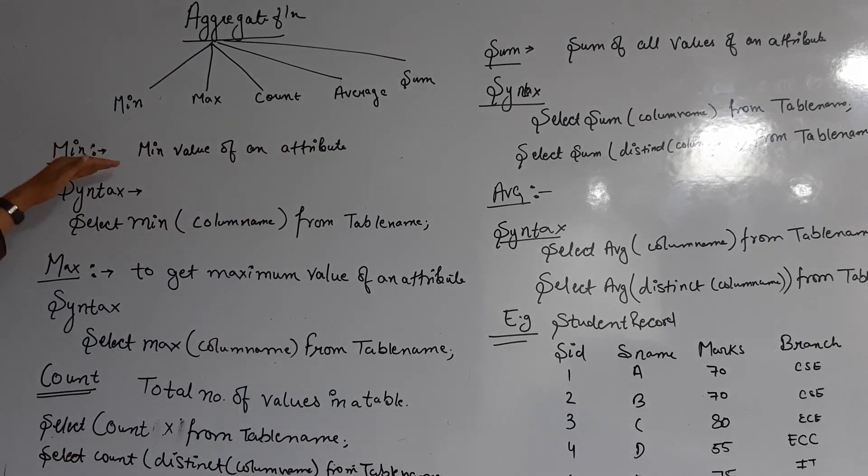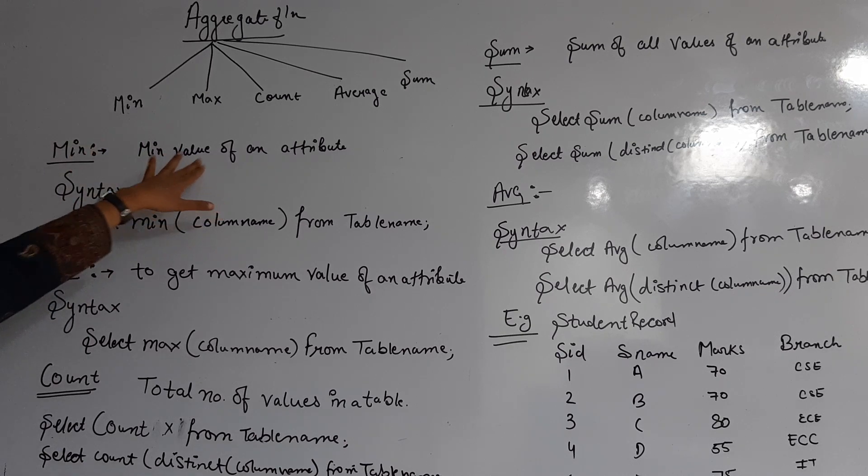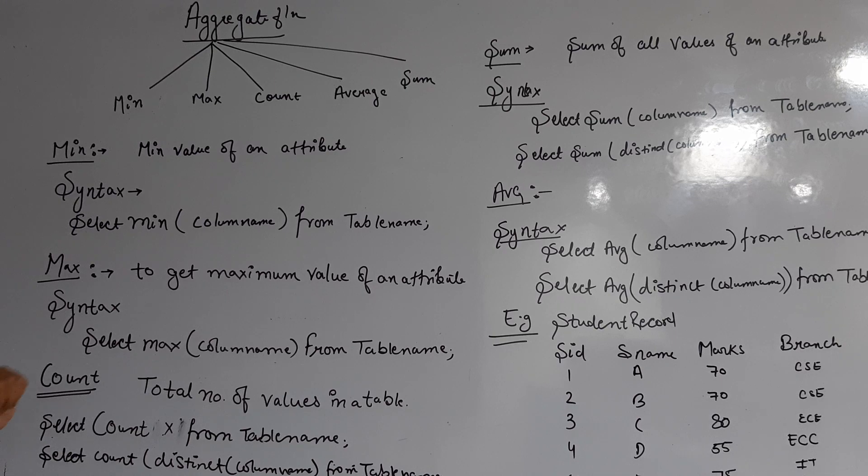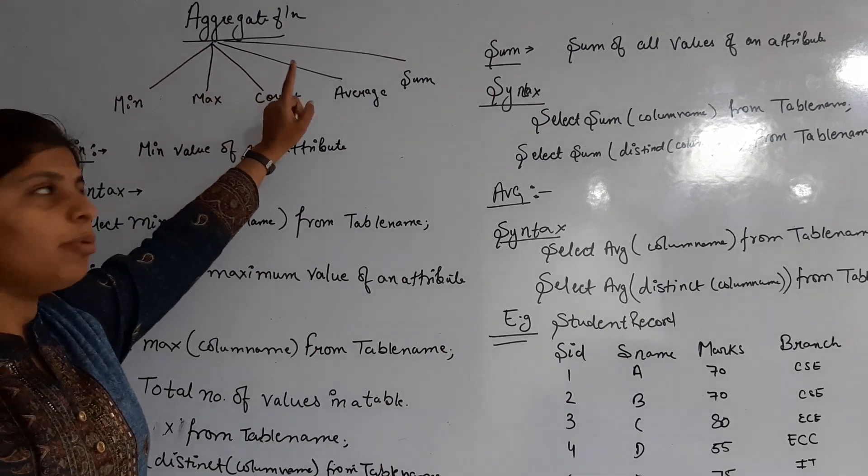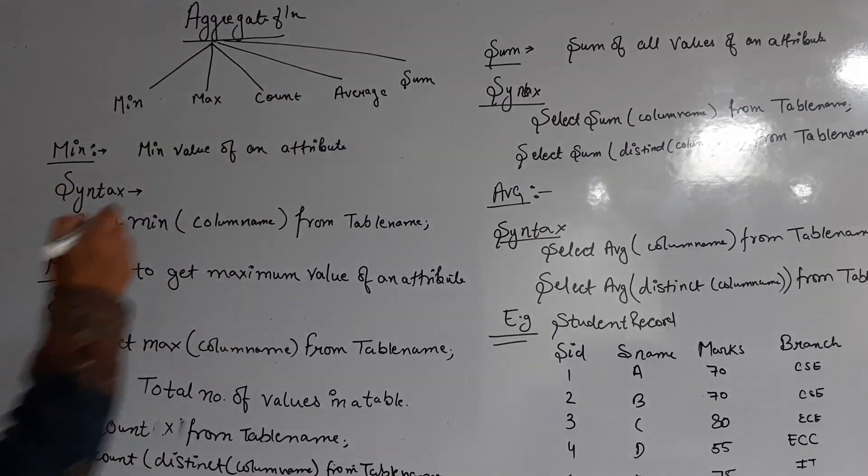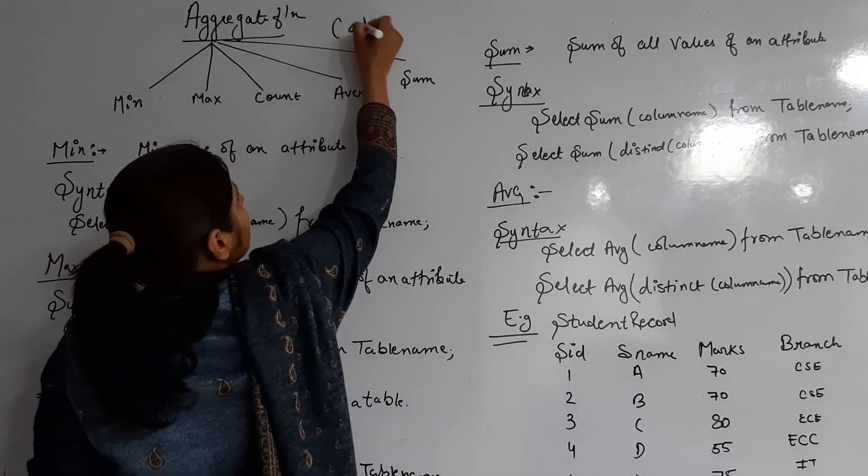Minimum means we have to find the minimum value of an attribute. The aggregate function works on attributes, it always applies to a particular column.